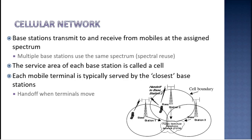The first one we are going to see here is the cellular network. A mobile network is also called as a cellular network. So we just learned that a wireless network is a mobile network, and a mobile network is also called as a cellular network.